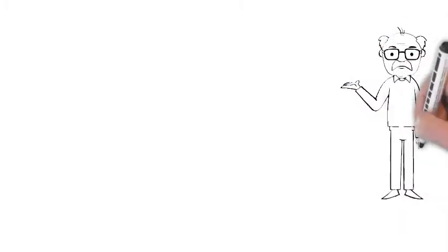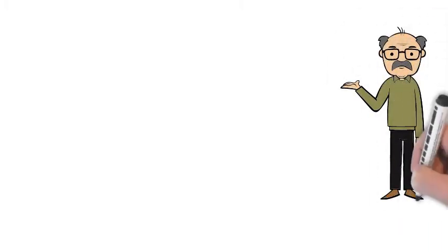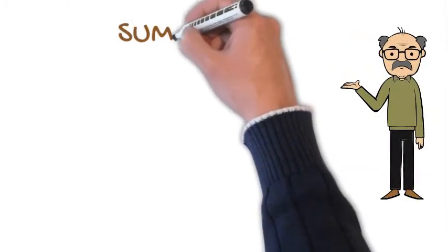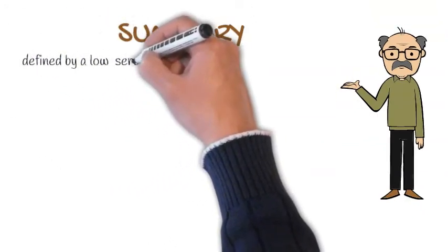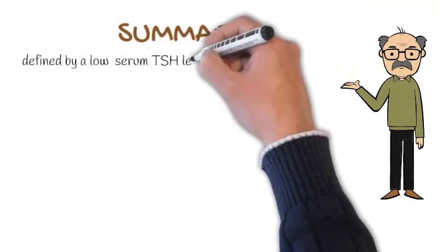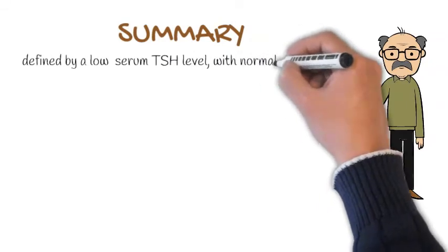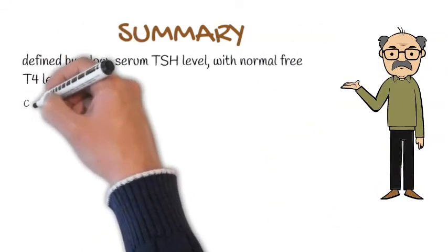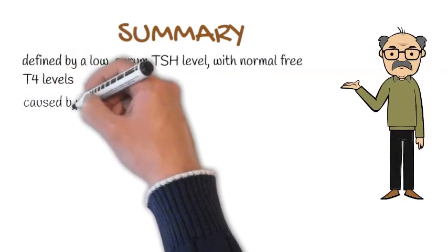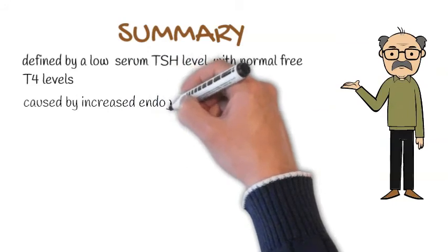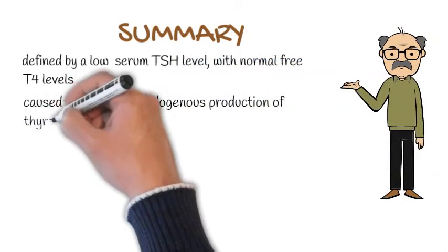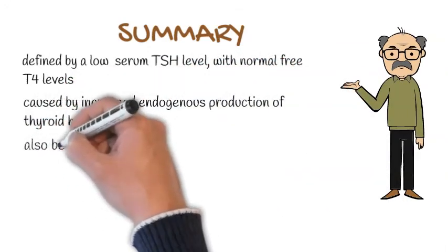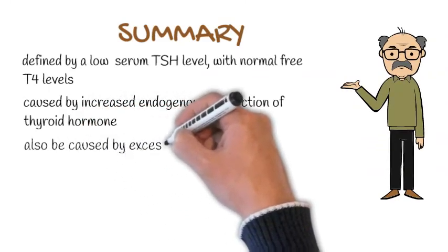In summary, subclinical hypothyroidism is defined by a low serum TSH level with normal free T4 levels. It can be caused by increased endogenous production of thyroid hormone, for example in Graves' disease, toxic nodular goiter, or transient thyroiditis. It can also be caused by excessive replacement therapy.